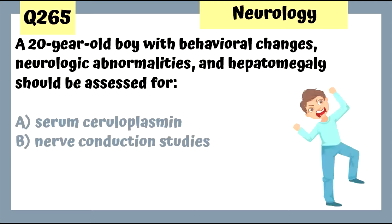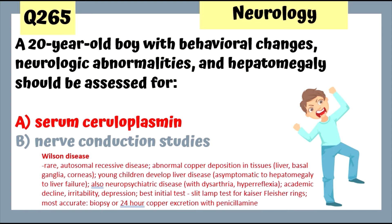Question 265: A 20-year-old with behavioral changes, neurologic abnormalities, and hepatomegaly — this patient has Wilson disease. Check serum ceruloplasmin. Wilson disease can cause neurologic problems due to copper deposition. Diagnose with biopsy or 24-hour copper excretion with penicillamine.